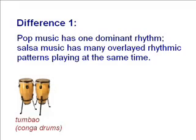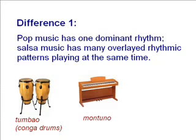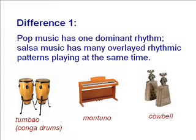Here is the tumbao pattern that is played on the conga drum. Here is the repeated pattern called the montuno, which is typically played on the piano or keyboard. And here is one of the rhythms played on the cowbell instrument. These are just three of at least a dozen or so commonly used rhythms, and each of them has its own variations. Given such variety, it will certainly take time and practice. The best place to start is with the tumbao rhythm, which we will review in detail in just a moment.